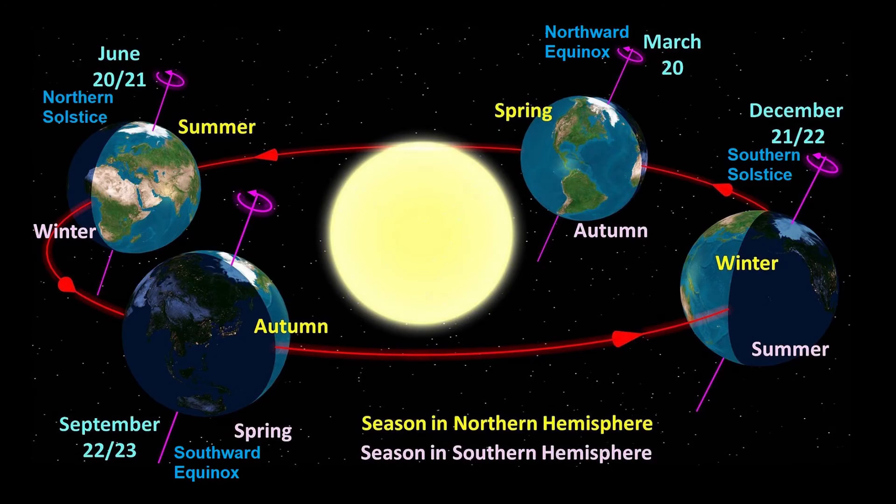In modern times, we have labeled the midpoints between solstices as the equinoxes, when the earth reaches the two points in its orbit where it is oriented exactly sideways to the sun.